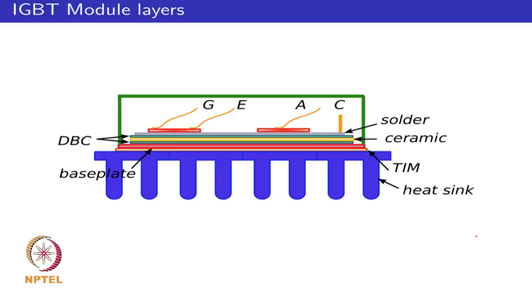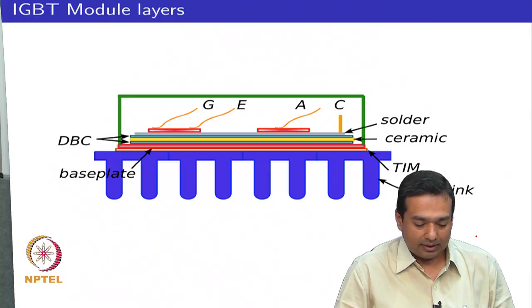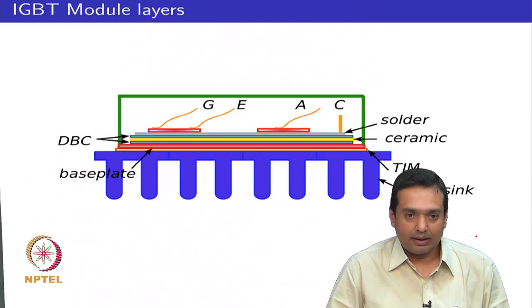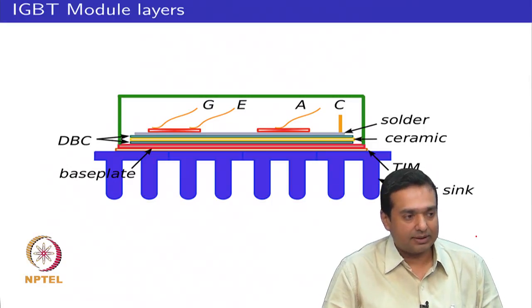Welcome to class 34 in Topics in Power Electronics and Distributed Generation. We have been looking at the structure of an IGBT module, which consists of multiple layers, each made of different material. During operation of the power module, these layers heat up and cool down, expanding and contracting due to thermal variations, to different extents, resulting in stress between adjacent layers. This stress can lead to strain or plastic deformations, causing damage.